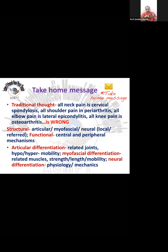The traditional thought is that all neck pain is cervical spondylosis, all shoulder pain is periarthritis, all elbow pain is lateral epicondylitis, and all knee pain is osteoarthritis. Structurally, remember that articular, myofascial, or neural structures could be leading to the symptoms.